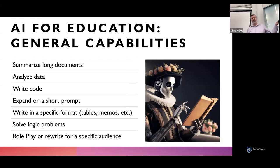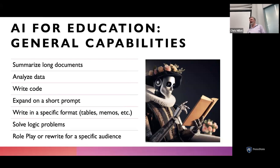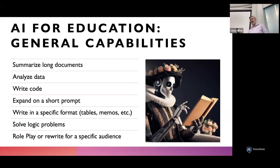Another capability is role-playing or rewriting for a specific audience. There are fun ways to use this — like 'take my essay and rewrite it in Shakespearean English.' But more practically, if you're a budding scientist who doesn't know how to communicate like scientists communicate, you can ask AI to take a paper you wrote and rewrite it in more formal scientific language. That's really valuable because you're expected to communicate effectively in a professional scientific context, and those disciplinary norms are important to learn.